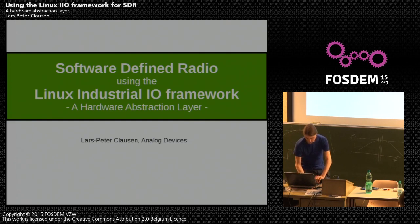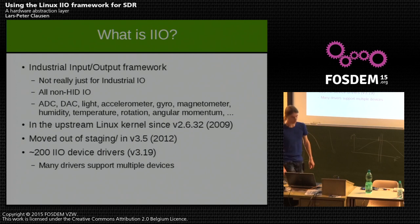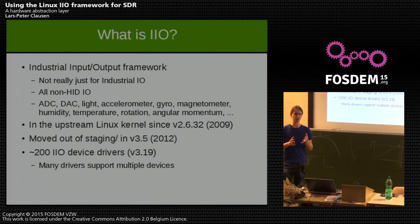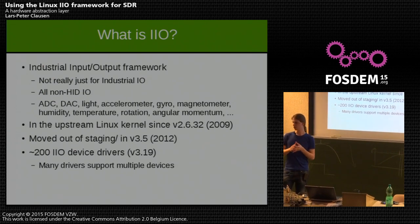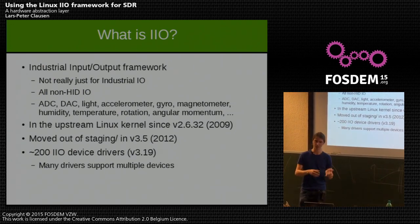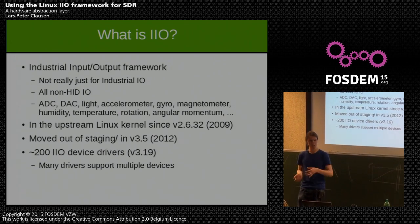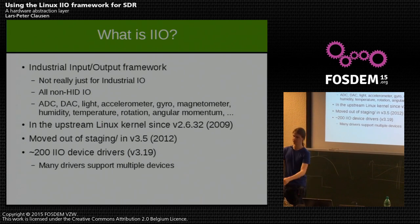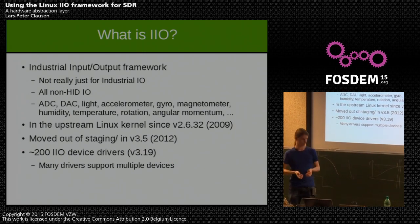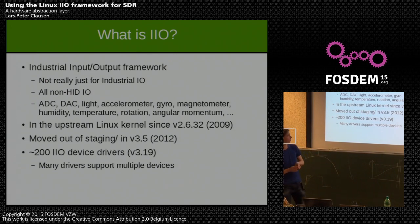Let me quickly start with what IIO actually is. It's a framework in the Linux kernel. It handles pretty much all non-human interface input and output devices. The name says industrial IO, but in the Linux kernel we already have the input framework which handles human interface input, so we had to come up with a different name. It really handles all kinds of sensors: ADCs, DACs, light sensors, accelerometers, and recently even lifestyle sensors like those in mobile phones that count steps or calories burned.